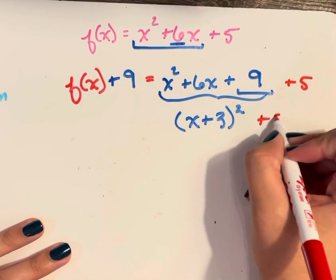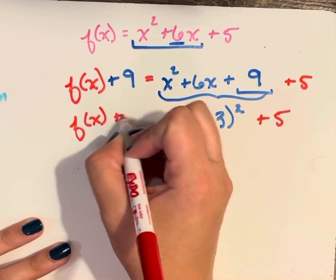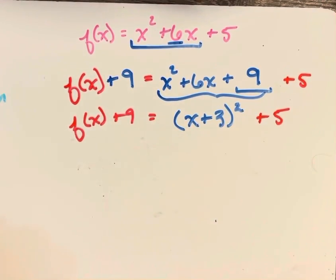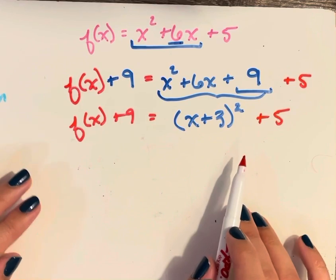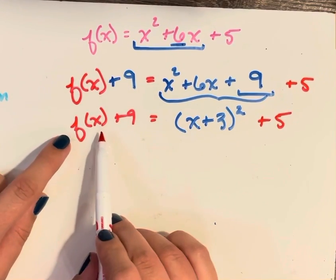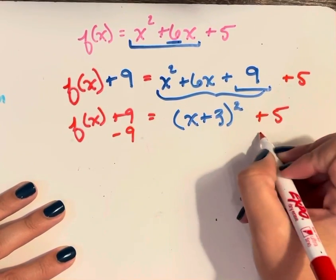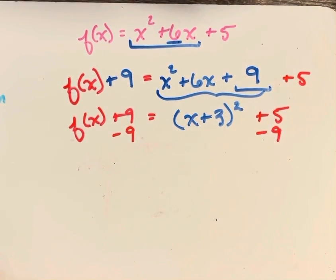I still have a plus 5 over here. On the left side, I have f of x plus 9. So this is getting closer to vertex form, but now I have this 9 over here on the left side. But I want f of x to be isolated. So I need to subtract 9 from both sides.